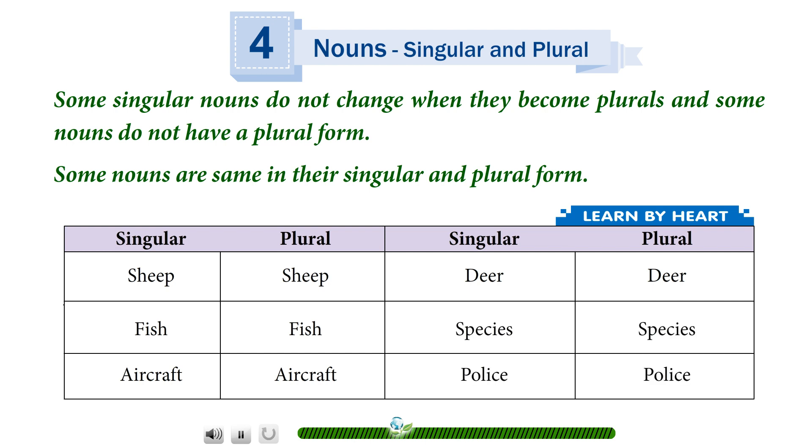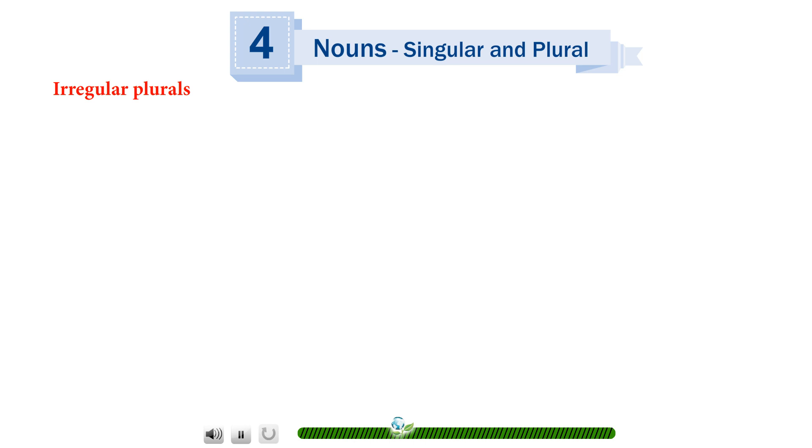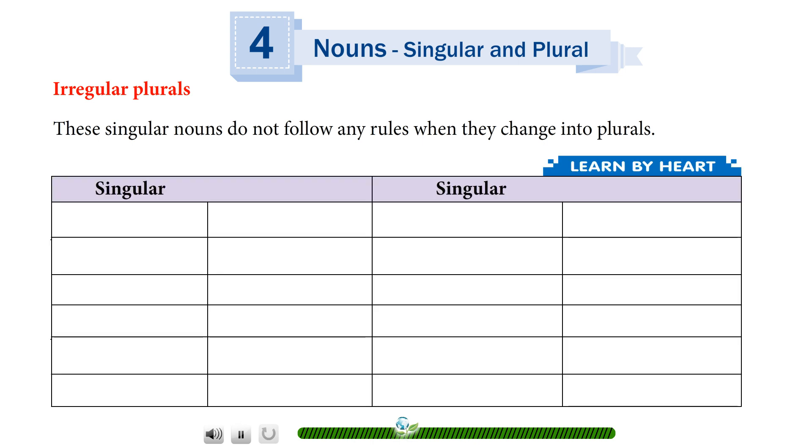Irregular plurals: these singular nouns do not follow any rules when they change into plurals. Learn by heart: person becomes people, man becomes men, goose becomes geese, mouse becomes mice, ox becomes oxen, cactus becomes cacti, child becomes children, fungus becomes fungi, syllabus becomes syllabi, analysis becomes analyses, oasis becomes oases, foot becomes feet